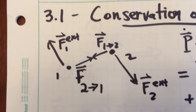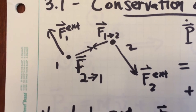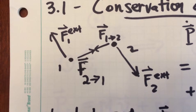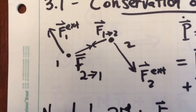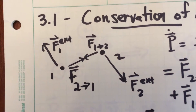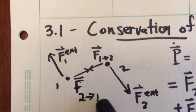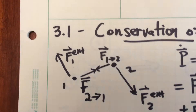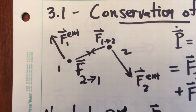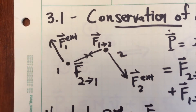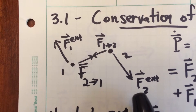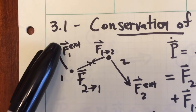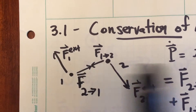The situation we're thinking of is something like this, where you have particles one and two. The two particles exert a force on one another — the force of particle two on one, and the force of particle one on two. Those two particles may also feel external forces: all the forces on particle two from the external world, and all the forces on particle one from the external world.